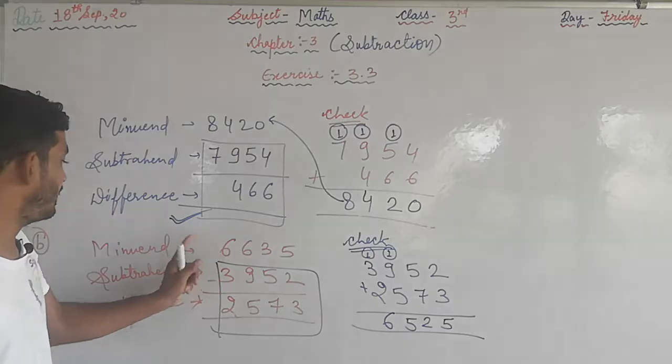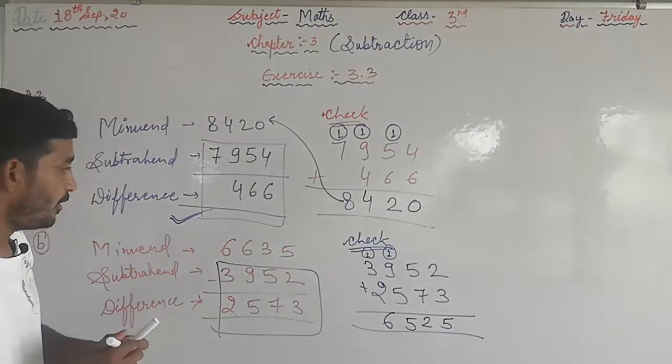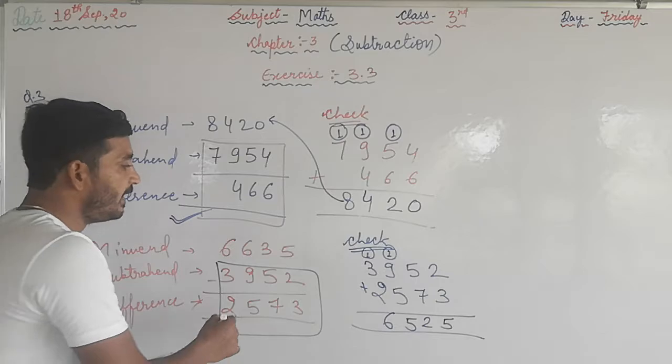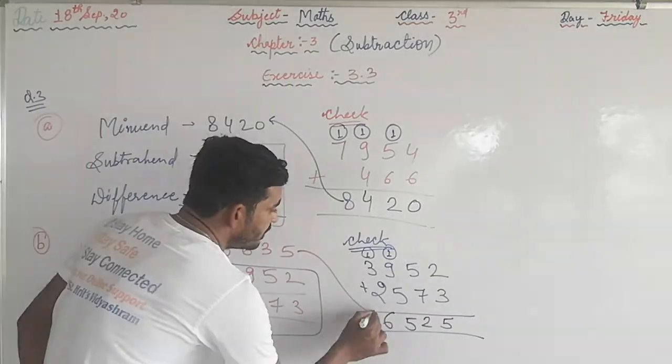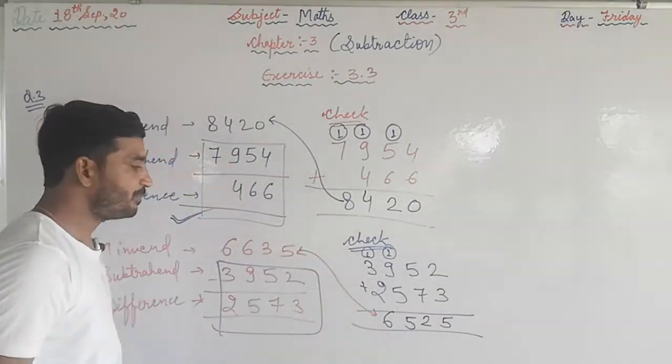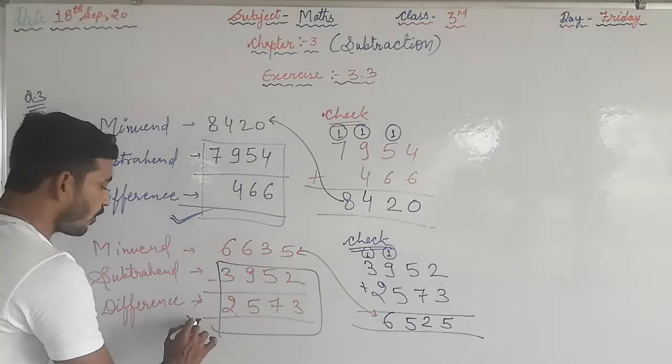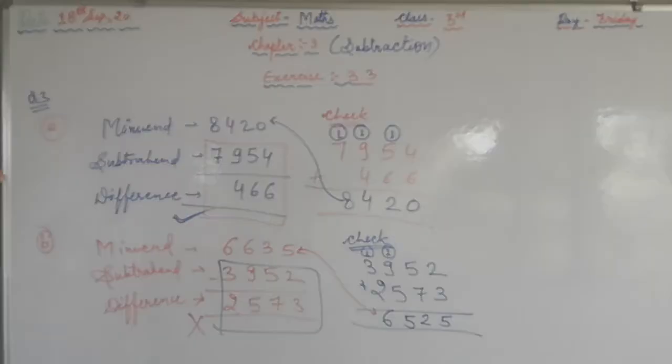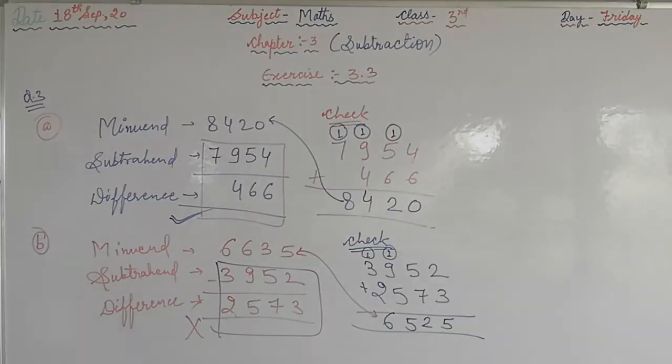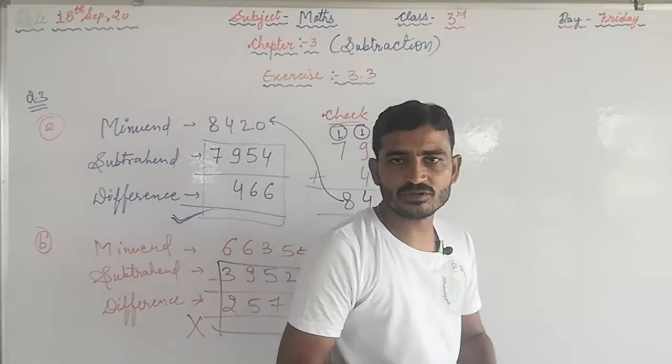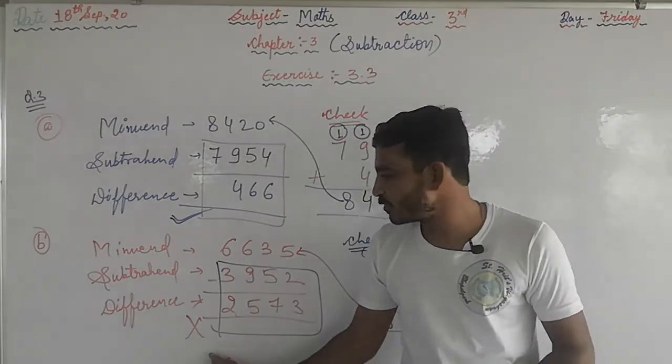Here is being 6635. Both the minuend and the result are not the same. This is not equal. That means your answer is wrong. Here the subtraction is not correct. The answer is not correct here in the second question.